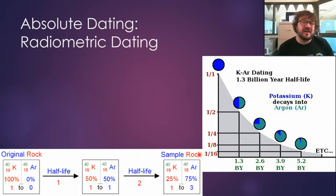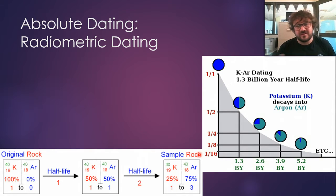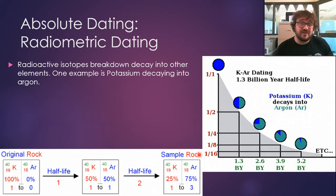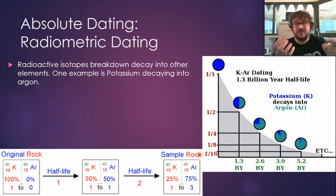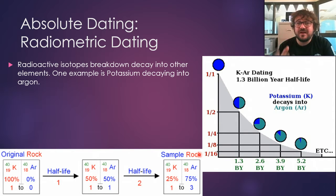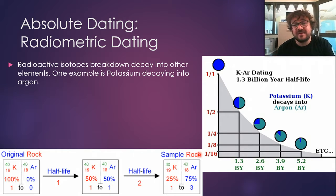Now we're going to look at absolute dating. There are a couple of different ways to do this — this is where we work out the actual age — but we're going to look at one example: radiometric dating, and it's the coolest thing in the entire world. Radioactive isotopes, which you'll remember from our chemistry and physics stuff, a radioactive isotope is a different version of an element because it's got a different number of neutrons, and these guys will break down — they decay — into other elements. One example of this is potassium decaying into argon.